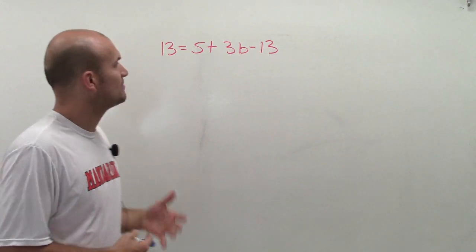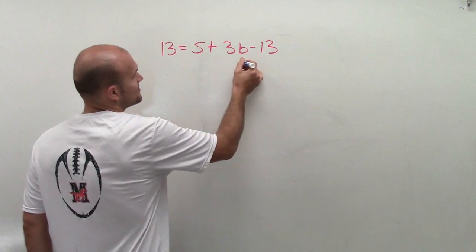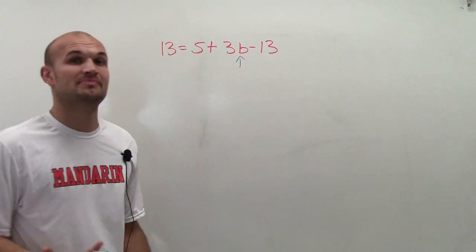So the main important thing, remember, that we need to do is, when looking at this, we need to isolate this variable. We need to get the b by itself.